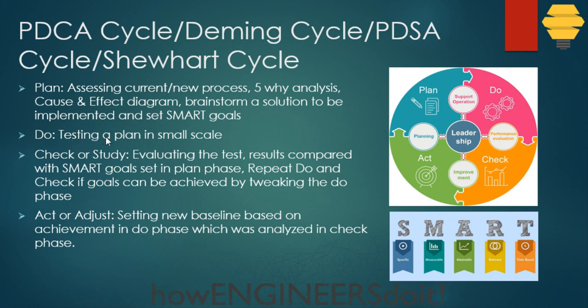Once we do this, we go to the next step — the Do phase — where we actually execute the plan that we have planned. We do this on a small scale and then check it in the next phase.